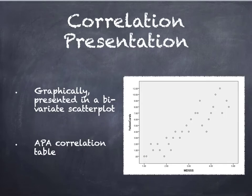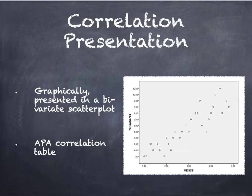Graphically, the best presentation for a correlation would be a scatterplot, where the values start at 0, 0, and you can get a nice visual of this positive relationship — as one value increases, the other value also increases. You can also do APA format correlation tables.